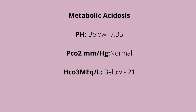The imbalances of acid-base balance are either metabolic or respiratory. When we say acidotic, the pH will be below 7.35. When we say alkalosis, the pH will be above 7.45. With metabolic imbalances, the PCO2 will be normal — what changes is the bicarb, whether it's metabolic acidosis or alkalosis. With respiratory imbalances, the pH will change depending on acidosis or alkalosis, and the carbon dioxide will be the one changing, while the bicarb will normally be normal.